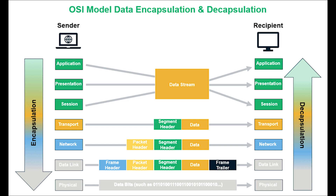The physical layer, for example, doesn't encapsulate or decapsulate — it simply converts the data into zeros and ones and sends it. Overall, encapsulation of data adds various functionalities and features to data transmission, but mainly it provides security and reliability for data transmission between two nodes in a network.